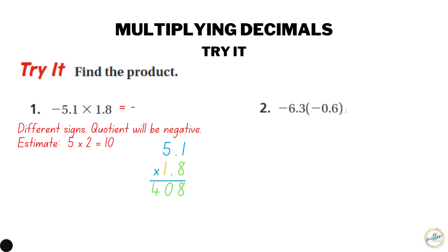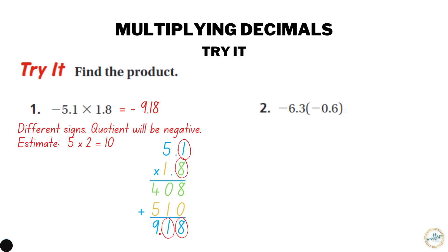We multiply 5.1 times 10, which is like multiplying by 1 with a placeholder, giving 510. When we add those up we get 918. Then we place the decimal — since both numbers have one decimal place, the answer has two decimal places, giving 9.18. Checking against our estimate of 10, that's pretty close, so yes, that's a reasonable answer. And since it's negative times positive, the final answer is negative 9.18.